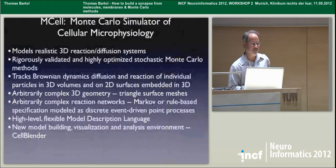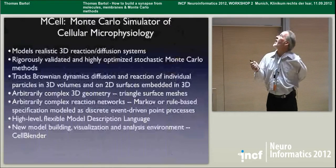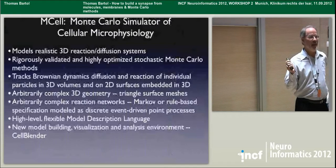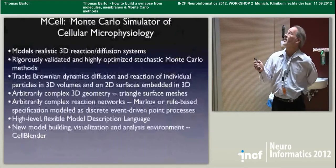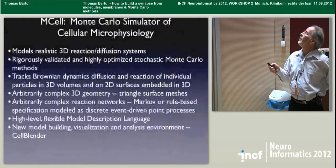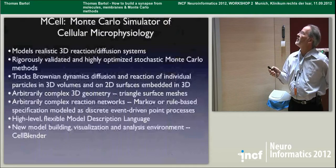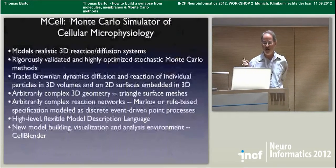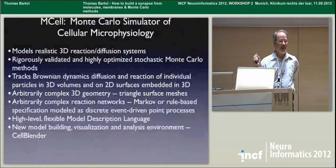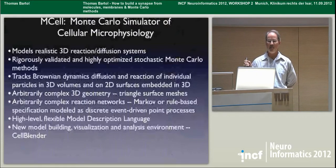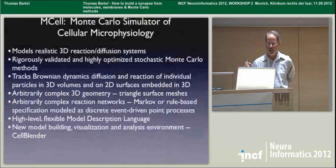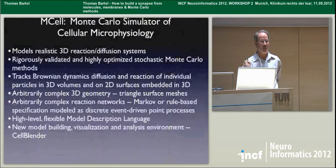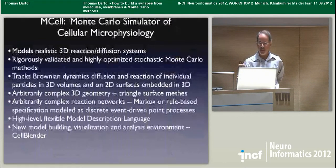Fortunately, we use MCell, which is a particle-based method that tracks individual molecules through space and time. Each molecule is only in one state at any one moment in time. It models 3D reaction-diffusion systems using rigorously validated and highly optimized stochastic Monte Carlo methods to track the Brownian dynamics of individual particles in 3D volumes and 2D surfaces embedded in 3D. We can handle arbitrarily complex 3D geometry from our 3D reconstruction. We make triangulated surface meshes because we track particles in 3D space — each particle knows where it is. We don't need to voxelize space, which is a large advantage in simulating complex geometries.